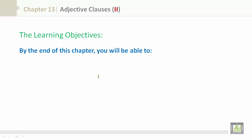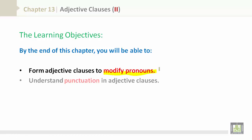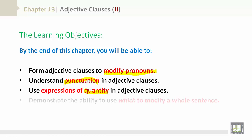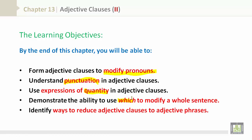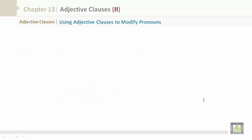The learning objectives. By the end of this chapter, you will be able to form adjective clauses to modify pronouns, understand punctuation in adjective clauses, use expressions of quantity in adjective clauses, and demonstrate the ability to use which to modify a whole sentence. Also, identify ways to reduce adjective clauses to adjective phrases, using adjective clauses to modify pronouns.